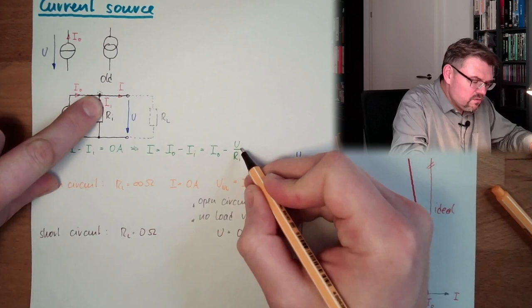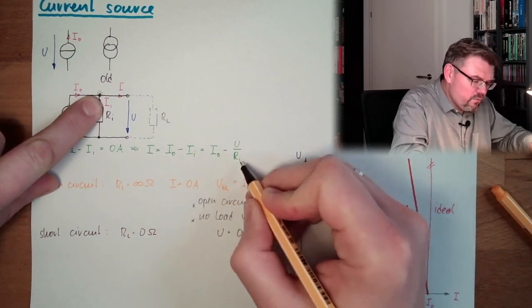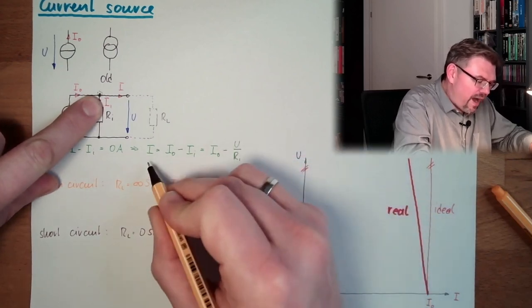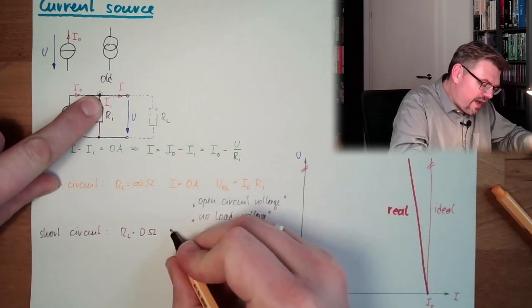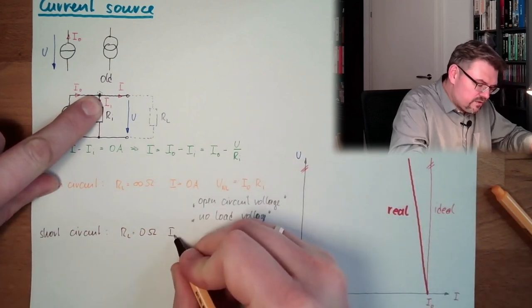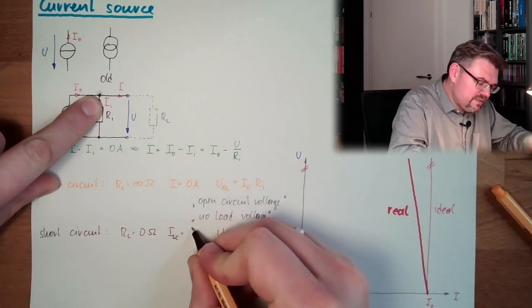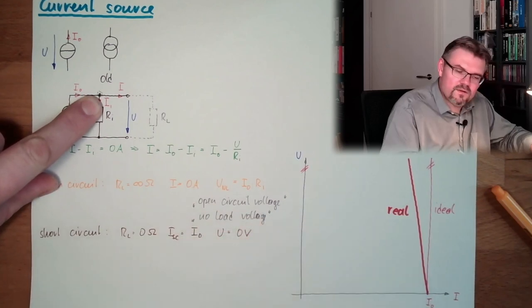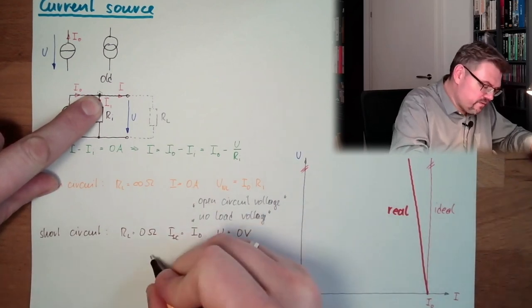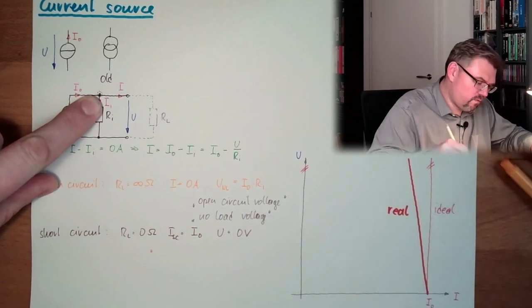So, if U is zero volts, this is zero, then Ii, if this is zero, then this will be gone. So, I equals I0. So, the I short circuit equals I0. Short circuit current. Wrong color.